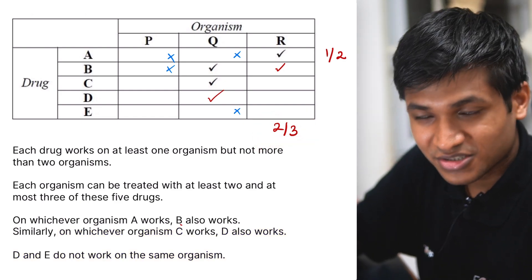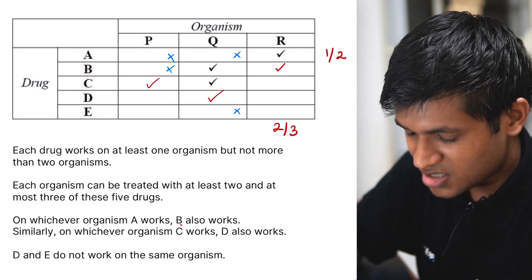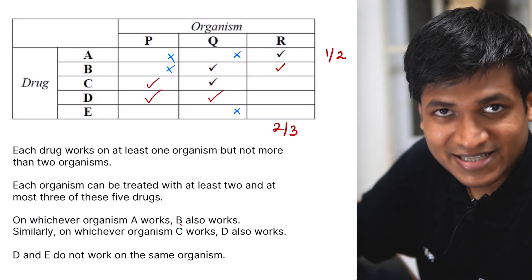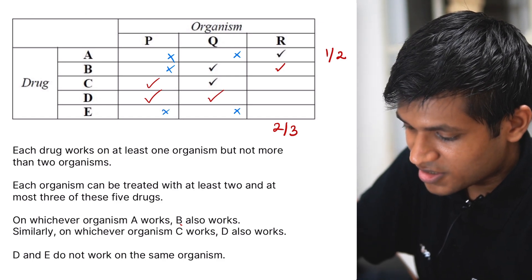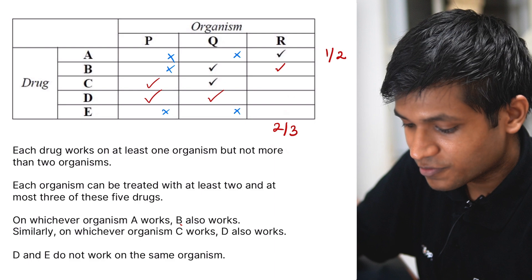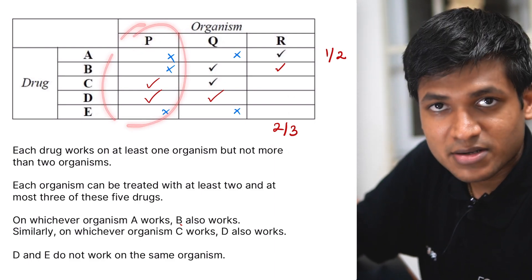The only combination that works, if you think about it, is if I put a tick over here at C, I'll have to put a tick at D, which makes E useless to me. So this satisfies the criteria of minimum two to three drugs working for an organism, and this is the only way they can satisfy it.